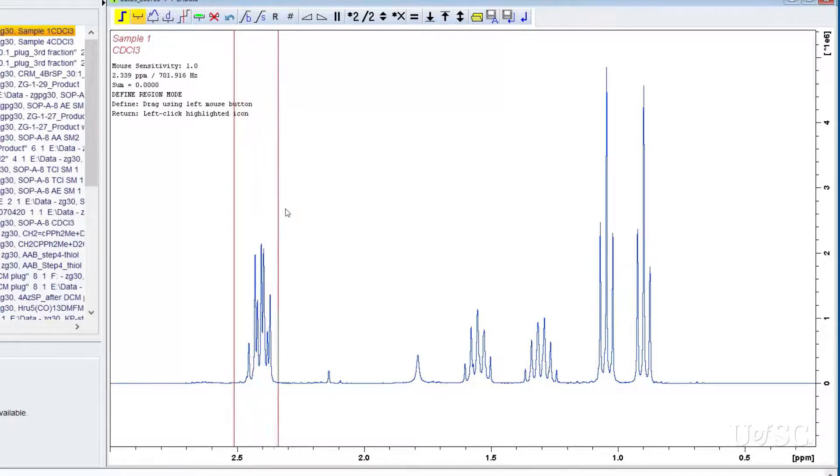Then move the cursor to the other side of the peak. Release the mouse button and the region should be created. This works in either direction. Repeat these steps for every region you want to integrate.